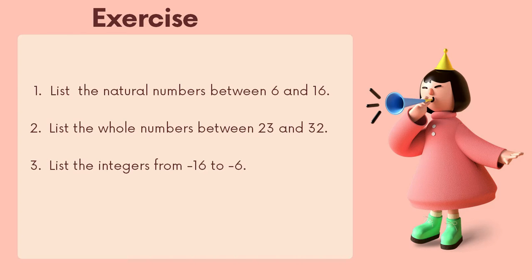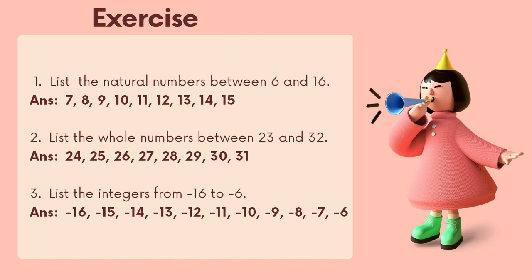Exercise: list the natural numbers between six and sixteen; list the whole numbers between twenty-three and thirty; list the integers from negative sixteen to negative six. For number one, the answer is seven, eight, nine, ten, eleven, twelve, thirteen, fourteen, fifteen. For number two, the answer is twenty-four, twenty-five, twenty-six, twenty-seven, twenty-eight, twenty-nine, thirty, thirty-one.